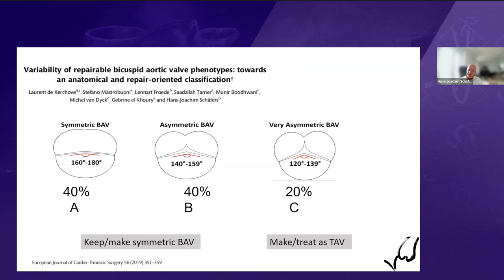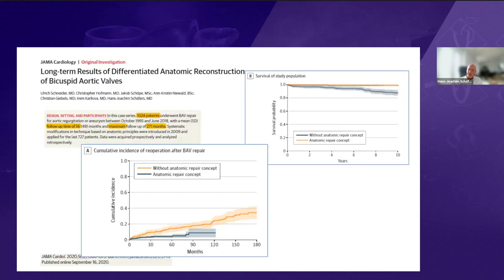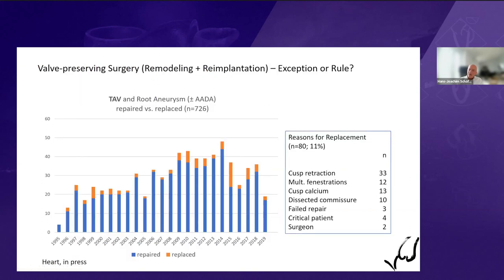The therapeutic consequence is clear: if we have a symmetric bicuspid valve, we keep it symmetric; if asymmetric, we make it symmetric. The challenge is the very asymmetric bicuspid valves, where we can either treat it as a tricuspid valve or improvise. In a paper published recently in JAMA Cardiology on more than 1,000 patients with bicuspid repair: without addressing these anatomical details, there was continuous attrition of valve function, which could be largely eliminated by addressing these anatomical features.